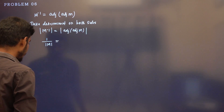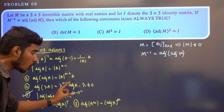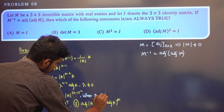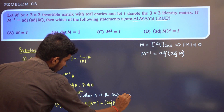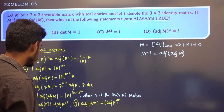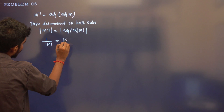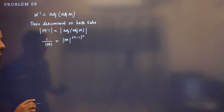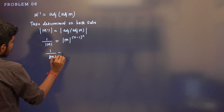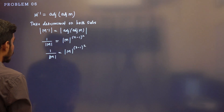What is the determinant of adjoint of adjoint of M? Determinant of adjoint of adjoint of A is det(A) whole power (n−1)², where n is the order of the matrix. So determinant of adjoint of adjoint of M is det(M)^(n−1)². Here n=3, so it is det(M)^(3−1)² = det(M)^4.